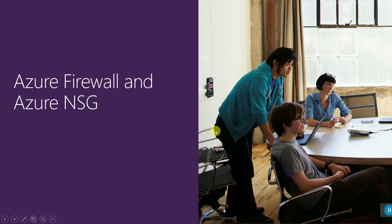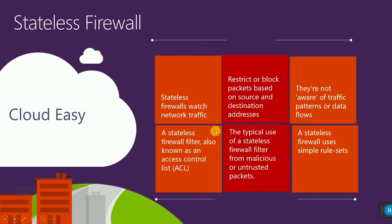What is Azure Firewall and what are NSGs? Before getting into the topic, let me tell you what a stateless firewall is. A stateless firewall is a simple rule set which restricts or blocks packets based on source and destination IP address. They are not aware of traffic patterns or data flow. It also filters malicious and untrusted packets based on source and destination. In other words, it is also called an ACL — Access Control List.